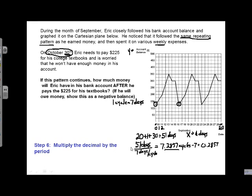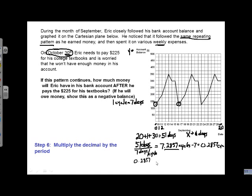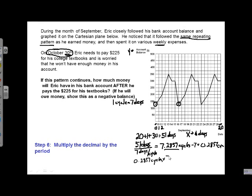Step 6 is we'll multiply the decimal by the period. So I'm going to take the .2857, which actually represents the number of cycles that were left. And I'm going to take the .2857, which is cycles. I guess we'll do our units. And I'll multiply that by the period, which is 7 days per cycle.